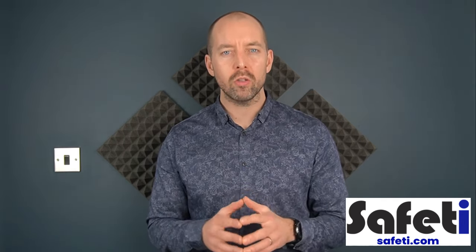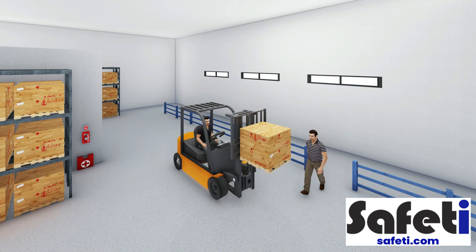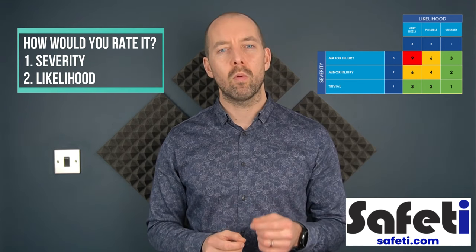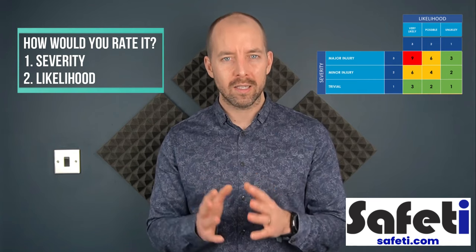Now, applying this to a scenario: on the screen you can see a forklift driver operating his vehicle in a warehouse-type environment. It appears the forklift driver has been moving with a pallet loaded onto the forks, and there is a pedestrian about to walk across his path. What we want you to do is give your opinion on how you would rate the severity of this scenario — the outcome of any accident that would occur — and secondly, look at the likelihood of it happening with everything you can see in the photo taken into account.